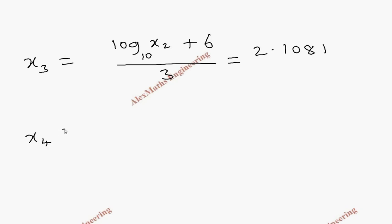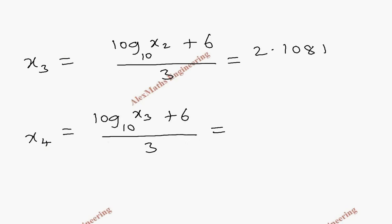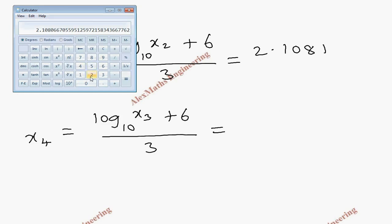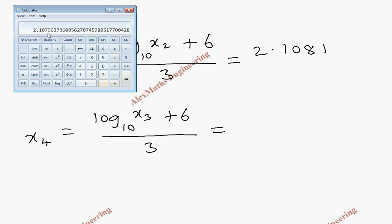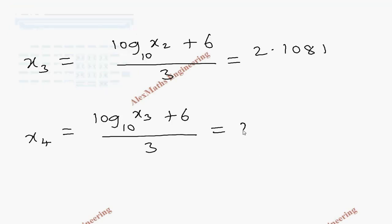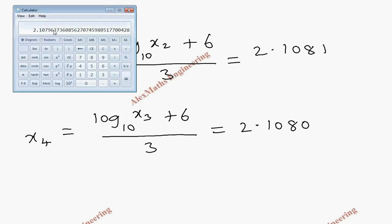Coming to x₄, which is log of x₃ base 10 plus 6, whole divided by 3. Using 2.1081, log of that value plus 6 divided by 3 gives 2.10796. Rounding off, this becomes x₄ equals 2.1080.